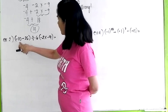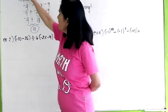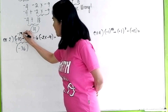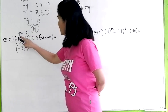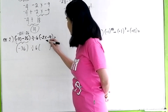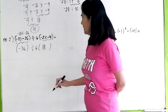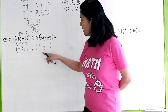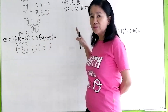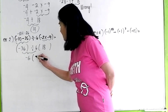Now, with problem number 2, I intentionally put groupings here for you to apply the G or the P. Do the grouped operation first: negative 9 times 2 is 18. Now, do we do multiplication or division next? Division first. Why? The rule is PEMDAS from left to right, whichever comes first. Division comes first. So negative 36 divided by 6 is negative 6, times 18.